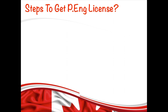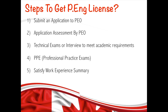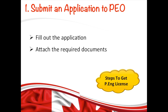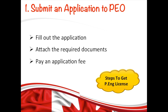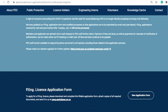Now it's time to walk you through the steps to get your PE license. There are five stages in total that you need to pass. The first step is to submit your application — it is a super straightforward and easy process. All you have to do is go to their official website; the link is given in the description box below.